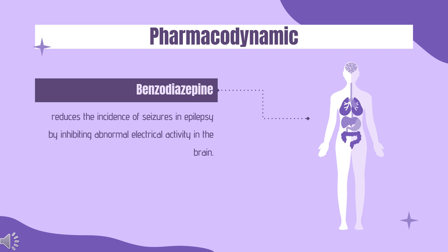Pharmacodynamic: Oxcarbazepine is an anticonvulsant drug that reduces the incidence of seizures in epilepsy by inhibiting abnormal electrical activity in the brain. Oxcarbazepine has also been associated with the development of dermatologic reactions, which can progress from a simple rash to potentially fatal reactions such as toxic epidermal necrolysis (TEN) or Stevens-Johnson syndrome (SJS). There have also been rare reports of hematologic abnormalities, including agranulocytosis and aplastic anemia.